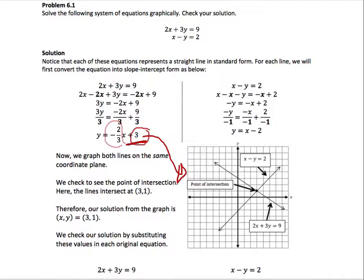We mark the y-intercept 3 on the y-axis. The slope means rise over run, so the rise is negative 2 and run is positive 3. Starting from this point,